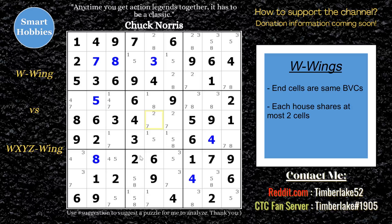Here's my next example. This is from the same puzzle, a little later — about the 18-minute and 45-second point. I found another W-wing. The candidates are: a 1-7 here and a 1-7 there. Just like the previous example, same ends — begins and ends with the same bivalued cell.